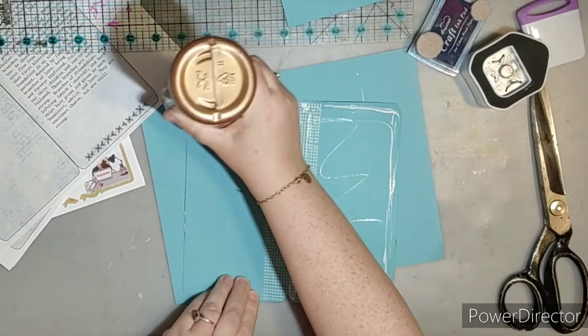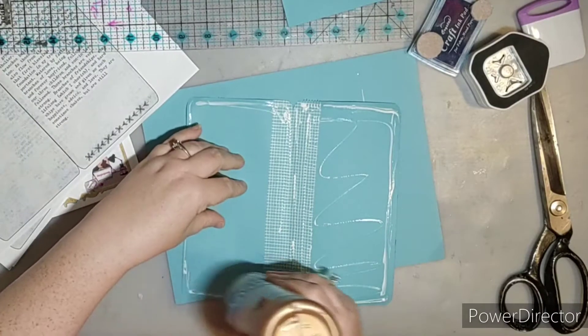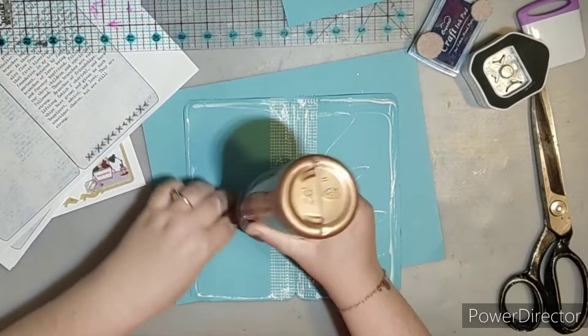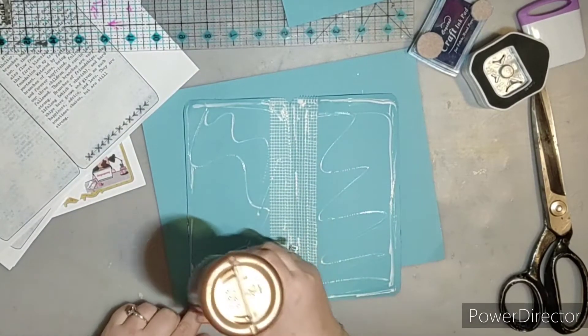I am going to add glue all the way around this and then I am going to stick it down to the cardstock and then I am going to cut, trim and distress.